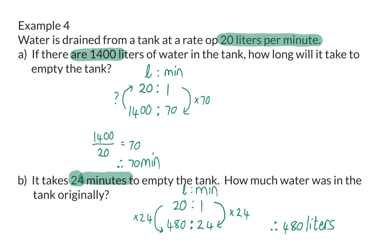From these examples, you could see that even though a rate compares values with different units, whereas a ratio compares values with the same units, the calculations for both are exactly the same, because both of them can be rewritten in fraction form.